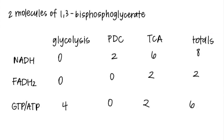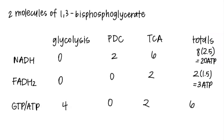We multiply NADH by 2.5 to get the number of ATP that yields, and we get 20 ATP. We multiply the number of FADH2 by 1.5 to get how much ATP it yields, and we get three ATP. Adding everything up, 29 ATP is yielded from the oxidation of two molecules of 1,3-BPG.